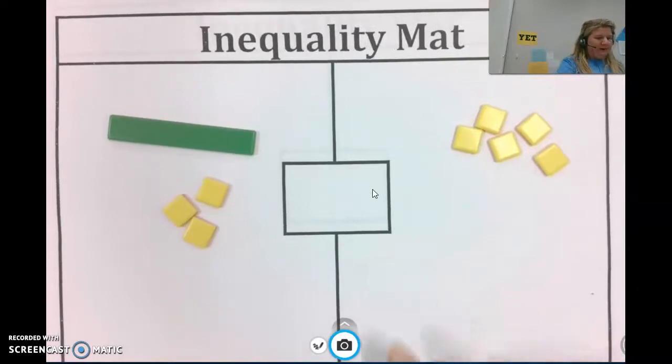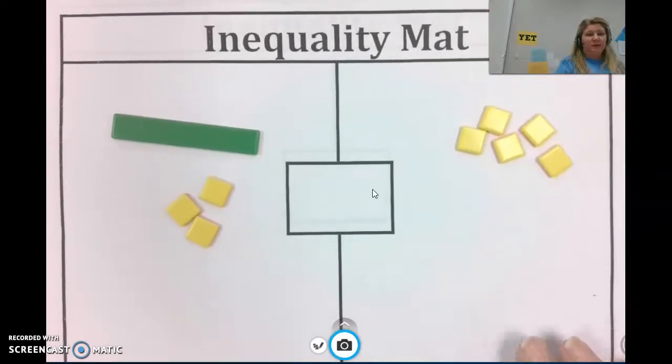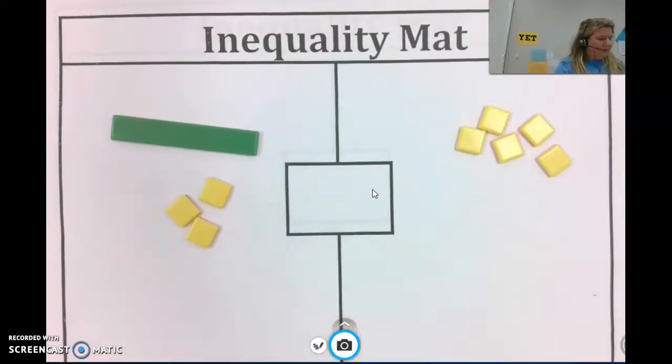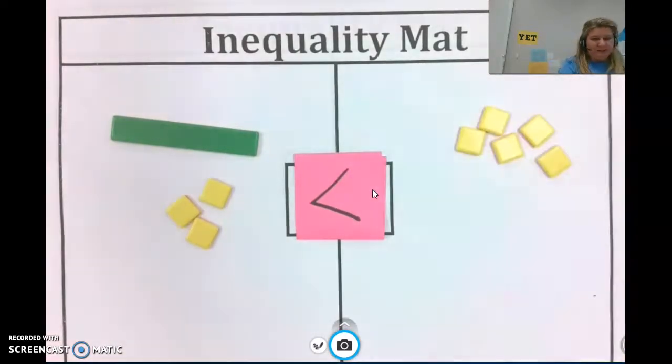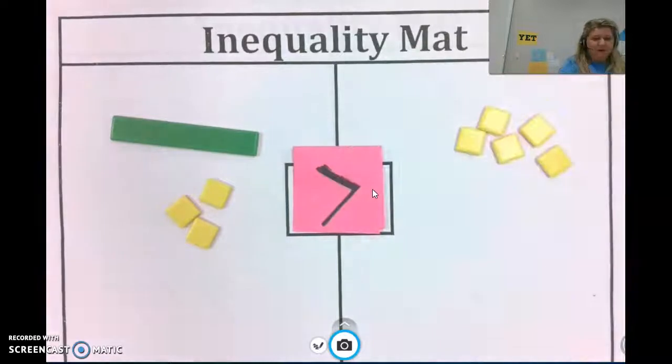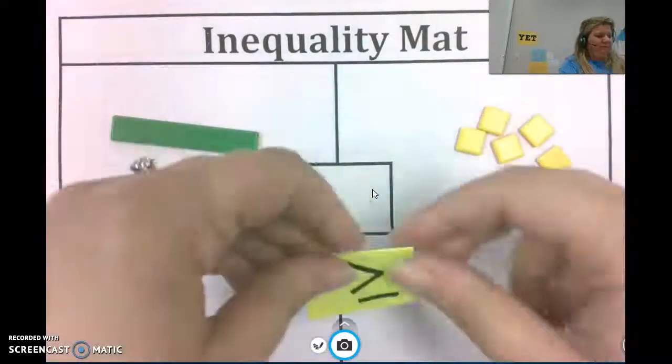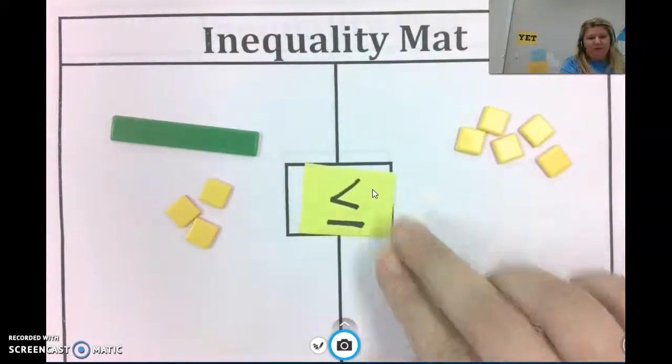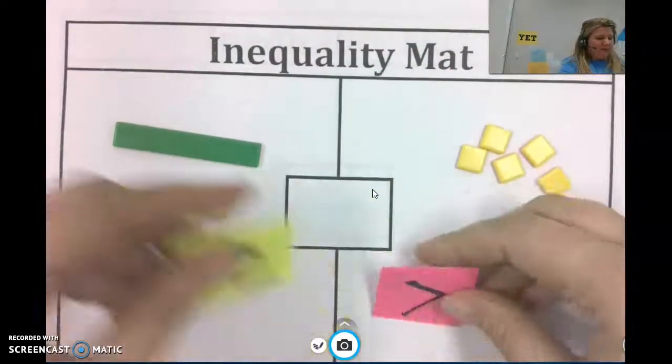We'll start with an inequality. Notice that the inequality mat is different than the equation mat because in the center there's a blank spot. So we can either put less than, greater than, greater than or equal to, or less than or equal to. So those are our inequality symbols.